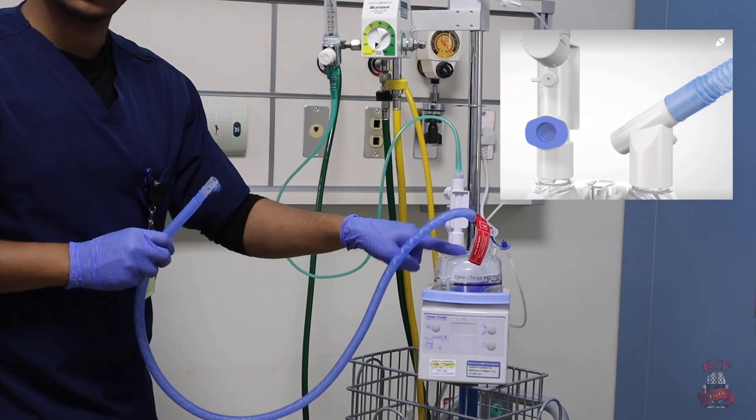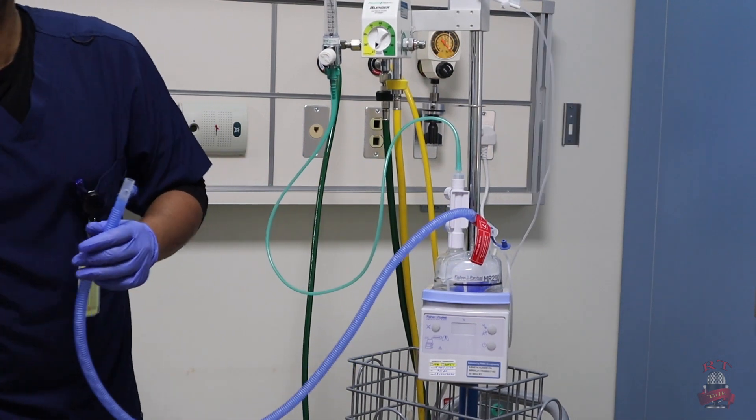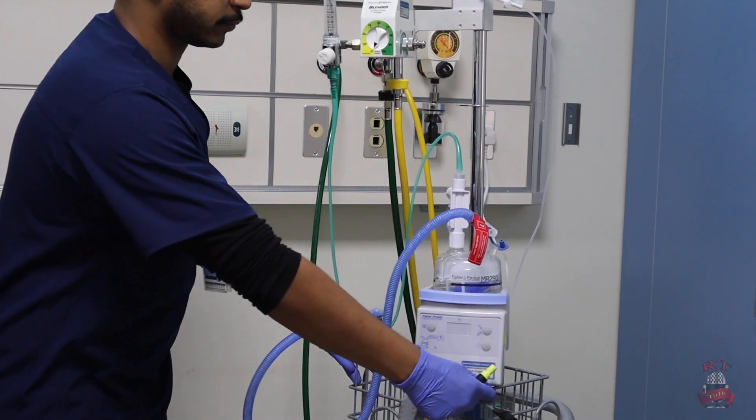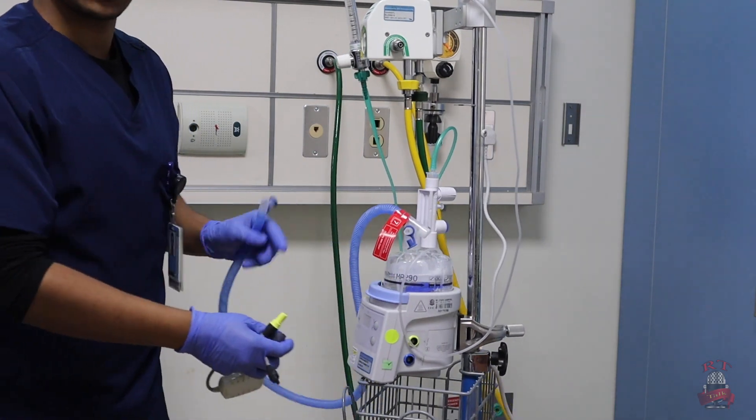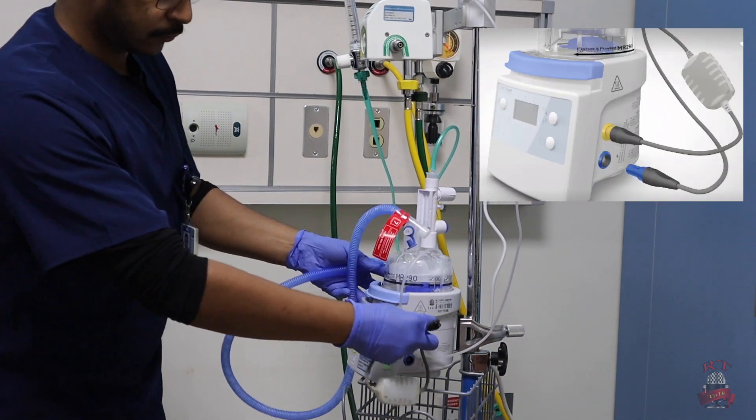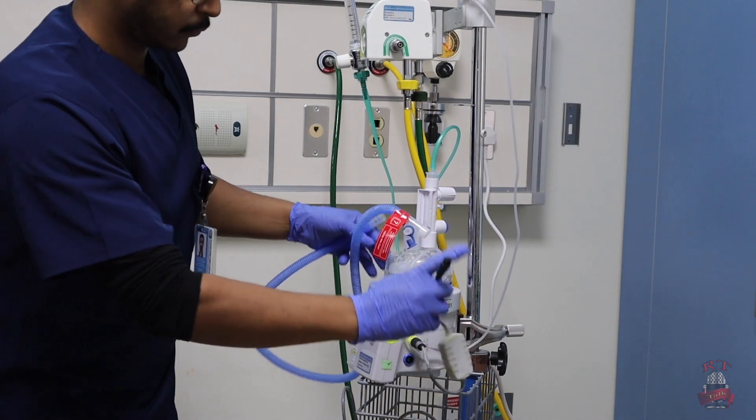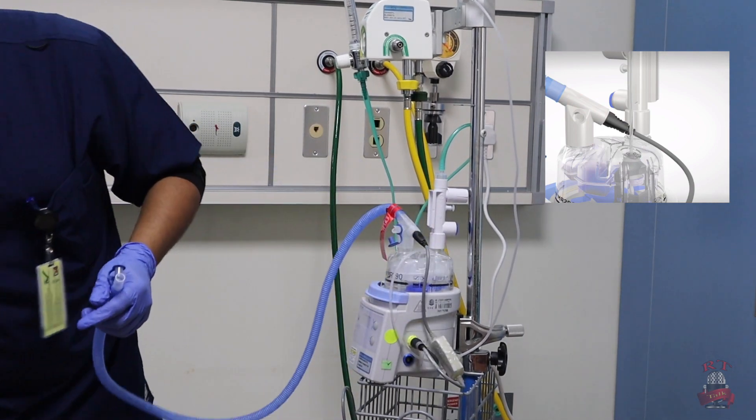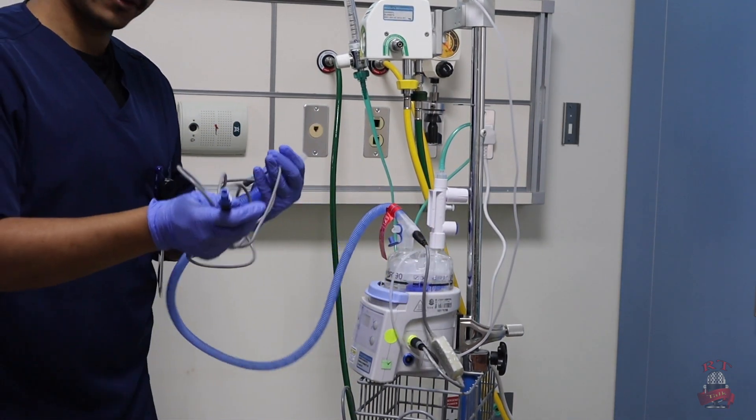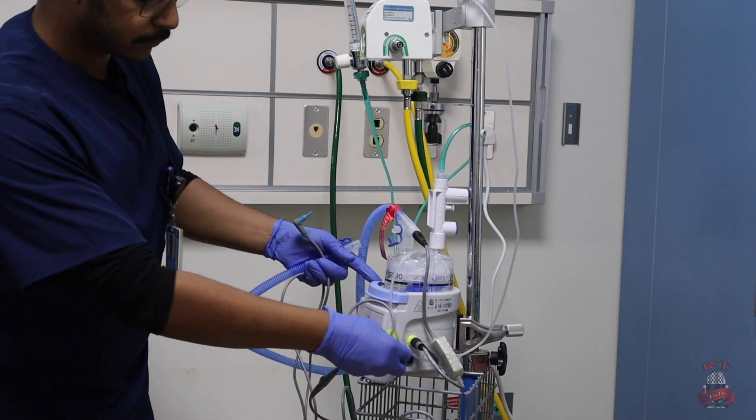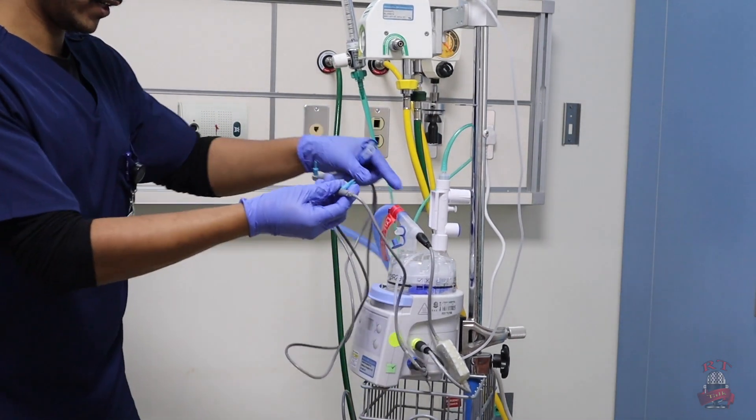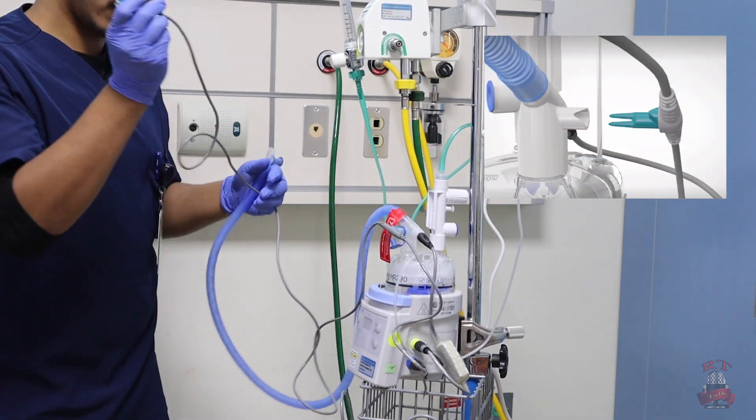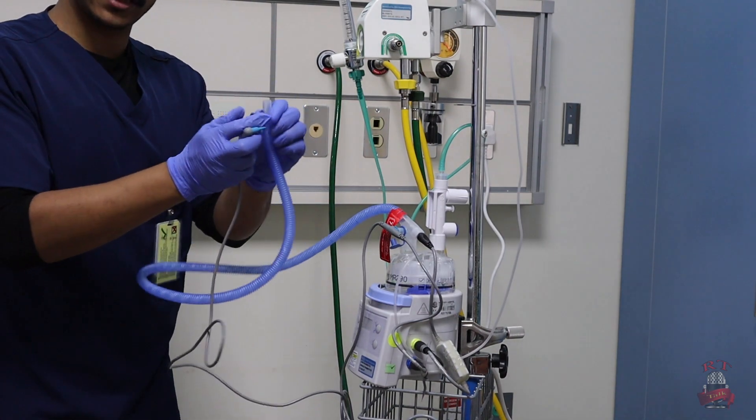Now we will connect our cables for our humidifier. We found the opening on the side of the humidifier and the end of the humidifier also. The other cable for the sensor. One in the beginning of the inspiratory limb, the other one in the end of the inspiratory limb.